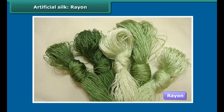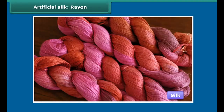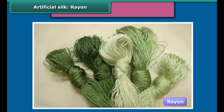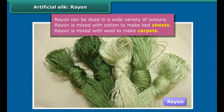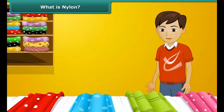Rayon is also known as artificial silk. It is cheaper than silk but resembles it, and can be woven like silk fibers and dyed in a wide variety of colors. Rayon can also be mixed with cotton to make bedsheets, or mixed with wool to make carpets.